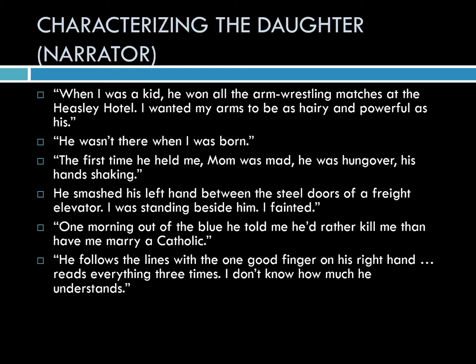Characterizing the daughter — the narrator says: When I was a kid, he won all the arm wrestling matches at the Heasley Hotel. I wanted my arms to be as hairy and powerful as his. He wasn't there when I was born. The first time he held me, mom was mad — he was hung over, his hands shaking. He smashed his left hand between the steel doors of a freight elevator. I was standing beside him. I fainted. One morning out of the blue, he told me he'd rather kill me than have me marry a Catholic. He follows the lines with the one good finger on his right hand, reads everything three times. I don't know how much he understands. So it's this stacking of characterizations that creates the wholeness of the picture of this family — particularly this father and this daughter. We don't have a lot of information about the daughter, but I think we have enough.